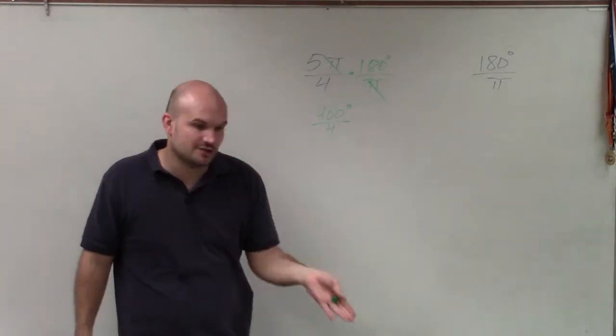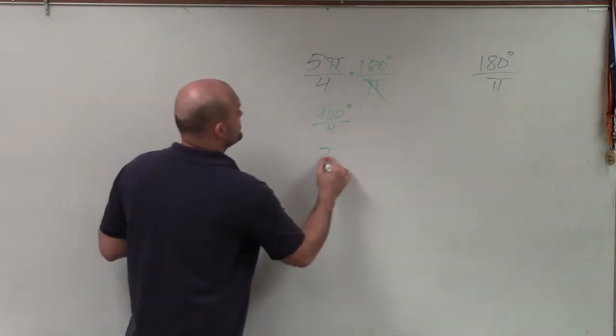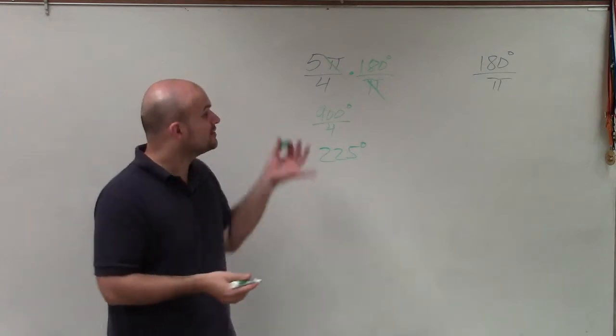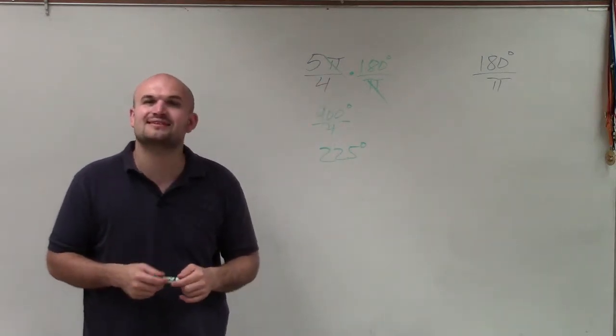Well, 900 divided by 2 is 450. Divide by 2 again is going to be 225 degrees. So there you go, ladies and gentlemen. That is how you convert from radians to degrees. Thanks.